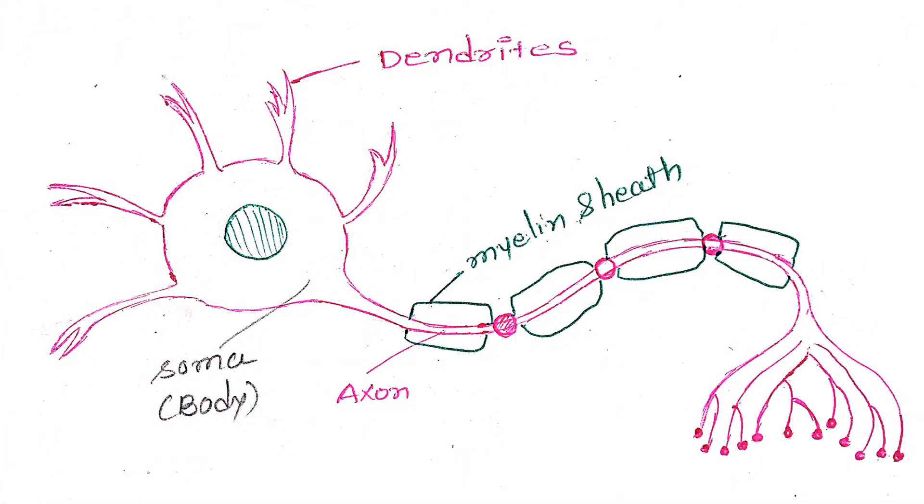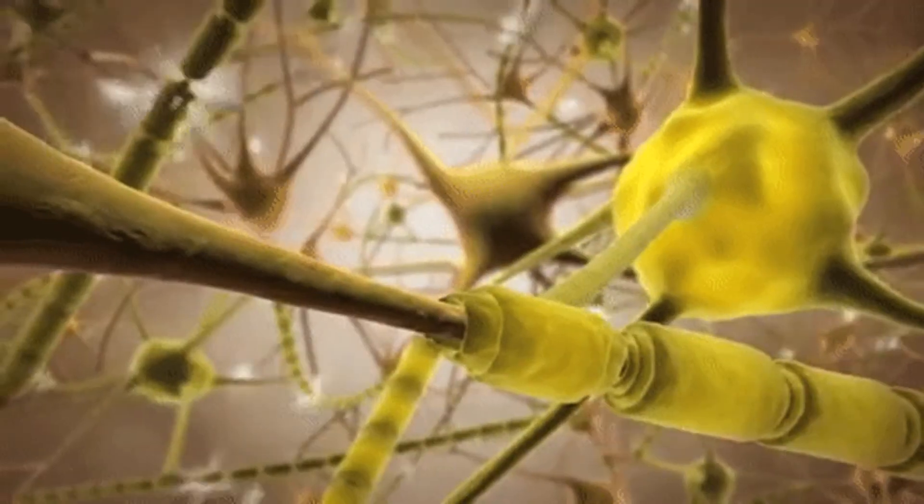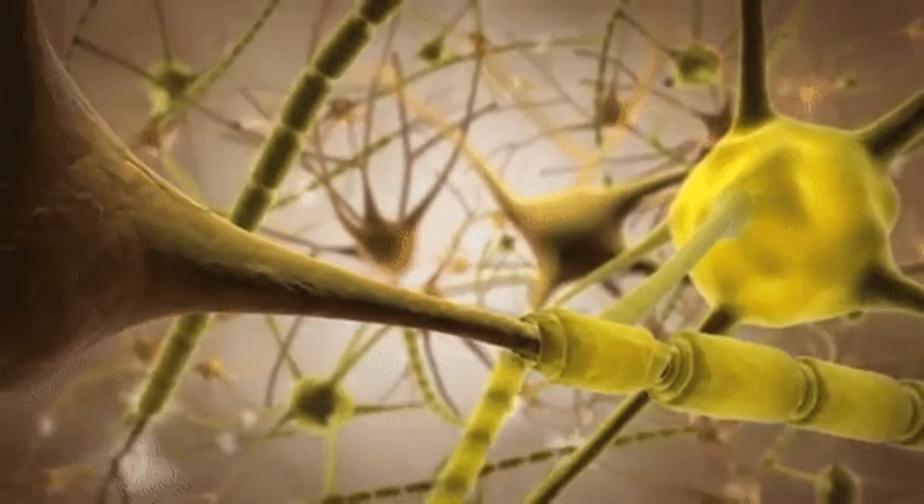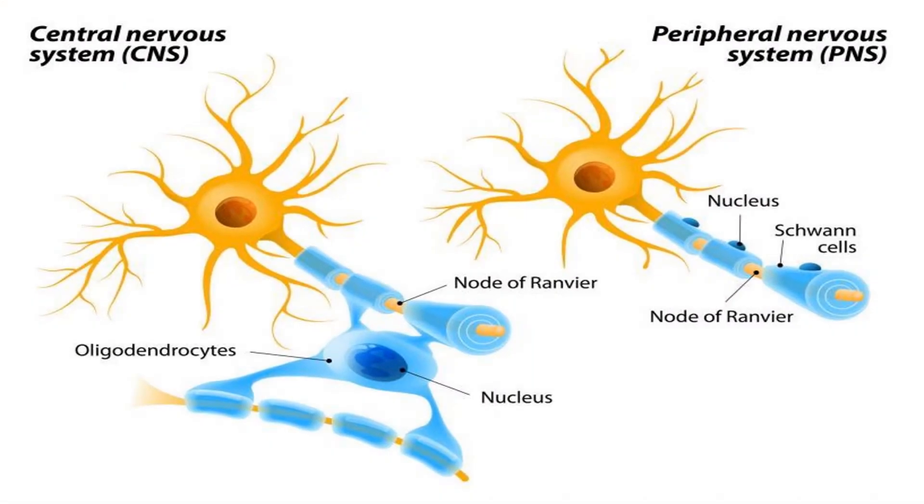Okay, so myelin sheath is the protective sheath surrounding the axon, allowing them to quickly send electrical impulses. This myelin sheath is produced by oligodendrocytes, which are the group of cells that support the neurons called neuroglia, especially in the CNS, whereas myelin sheath in the PNS is produced by Schwann cells.